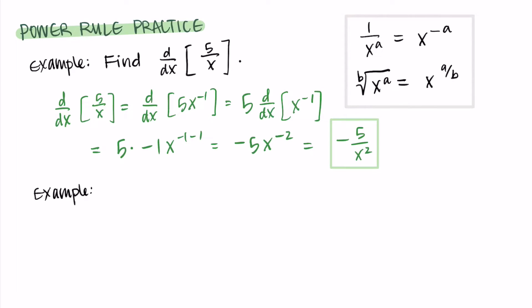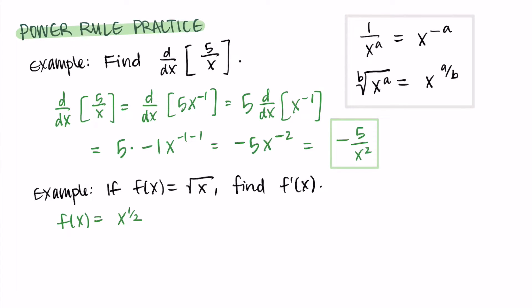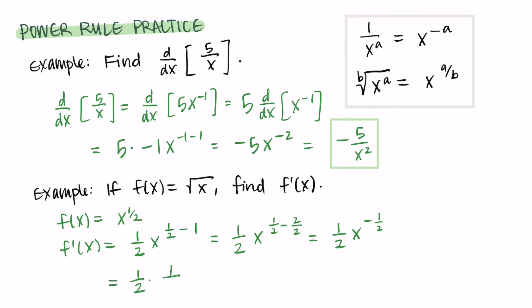Now let's do an example with radicals. If f(x) equals the square root of x, find f'(x). We first rewrite the square root of x as x to the one-half. Then f'(x) equals one-half times x to the one-half minus one. Since one-half minus one equals negative one-half, we have one-half x to the negative one-half. Rewriting without a negative exponent gives us one over two times the square root of x.